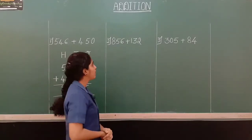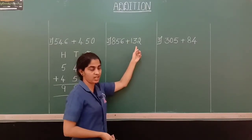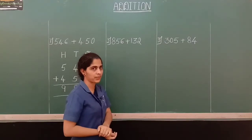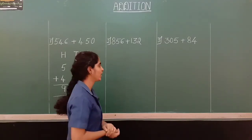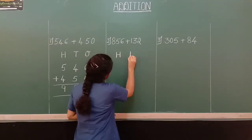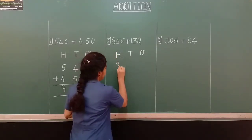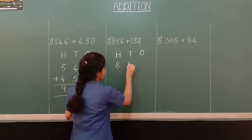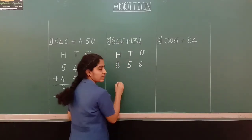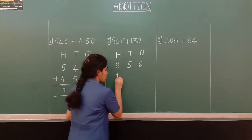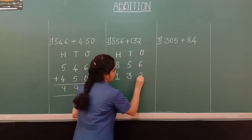Let us move to the second problem where we have 856 plus 132. You know the first step — writing the numbers according to the place value in vertical order. We have 100's, 10's, and 1's. So 8 is in 100's place, 5 in 10's place, and 6 in 1's place. For 132, 1 is in 100's place, 3 in 10's place, and 2 in 1's place.